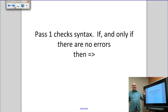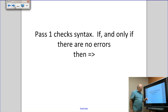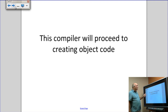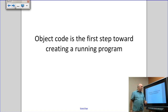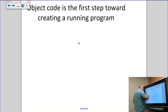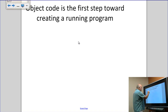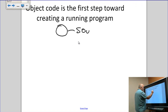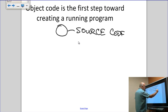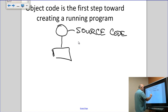If the code passes the syntax check, then and only then does it move on to creating the object code. Object code is the first step toward creating a running program. Here's your source code, here's your compiler — your compiler dumps out object code.